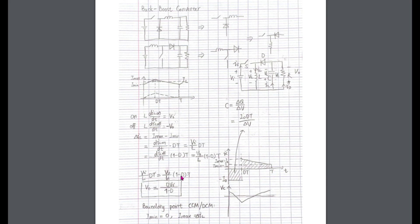We got V out equals V in d by 1-d. The average capacitor current is 0. Thus, the average IL is Iout.